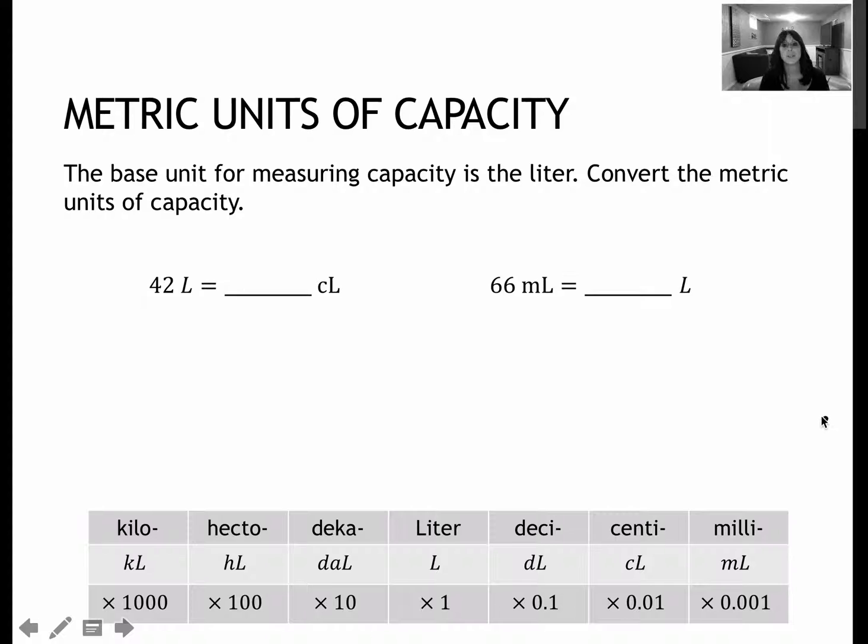If I'm going from liters to centiliters, remember that centi is 1/100th. So I know that if I'm going to 1/100th, I'm going to be multiplying it by 100. So that's 4200, which is the same as moving two places to the right.